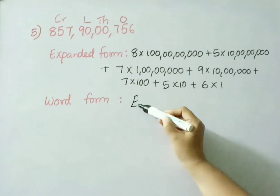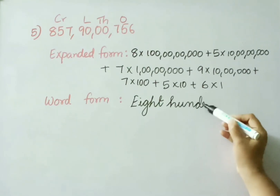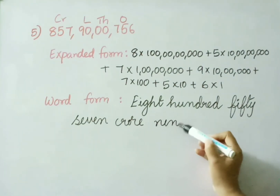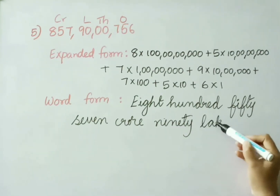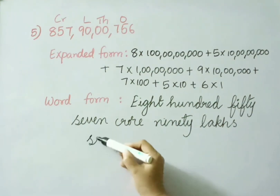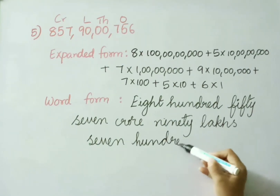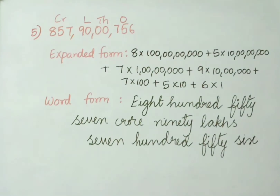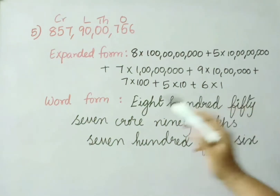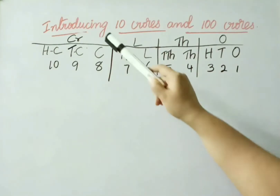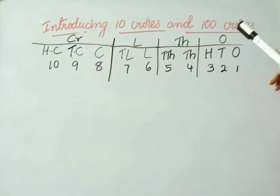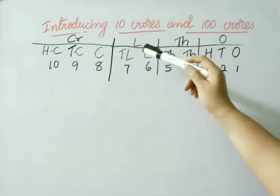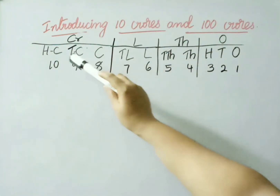Word form: 857 crore, 90 lakhs, 756. Now, introducing 10 crores and 100 crores. Under the ones period we have ones, tens, and hundreds. Under thousands period: thousands and ten thousands. Under lakhs period: lakhs and ten lakhs. Under crores period we already learned crores — today we are learning the extra places: ten crores and hundred crores.